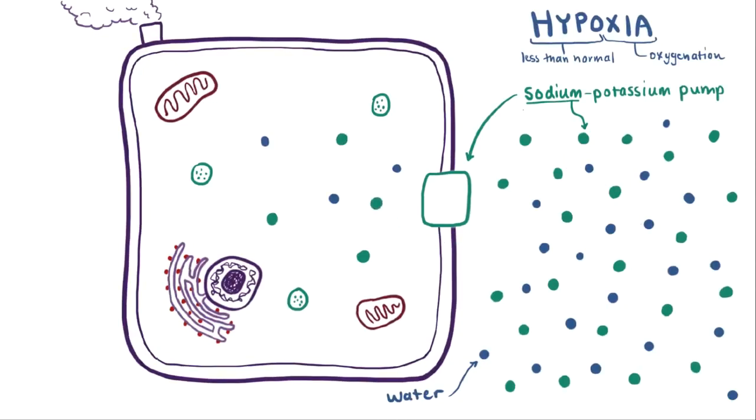But our pump doesn't do all this for free, and it needs ATP. So without ATP, it stops pumping sodium back out, and sodium starts to diffuse in. And it keeps diffusing in, and the concentration gradient goes away.